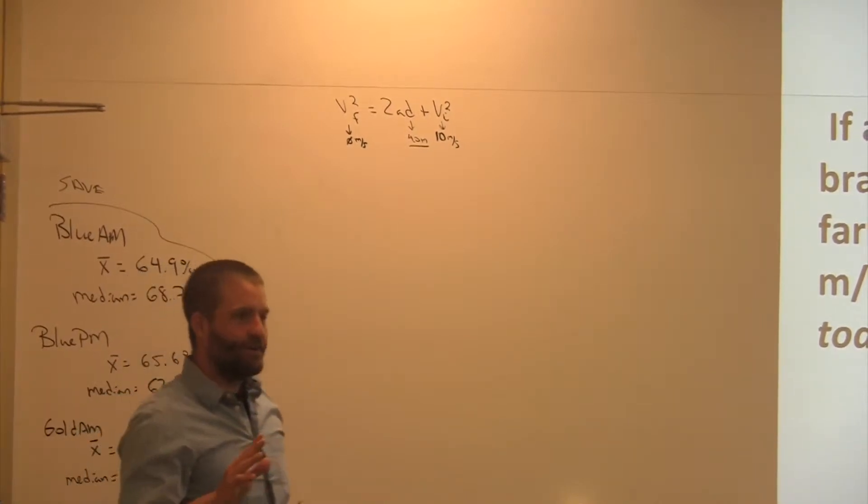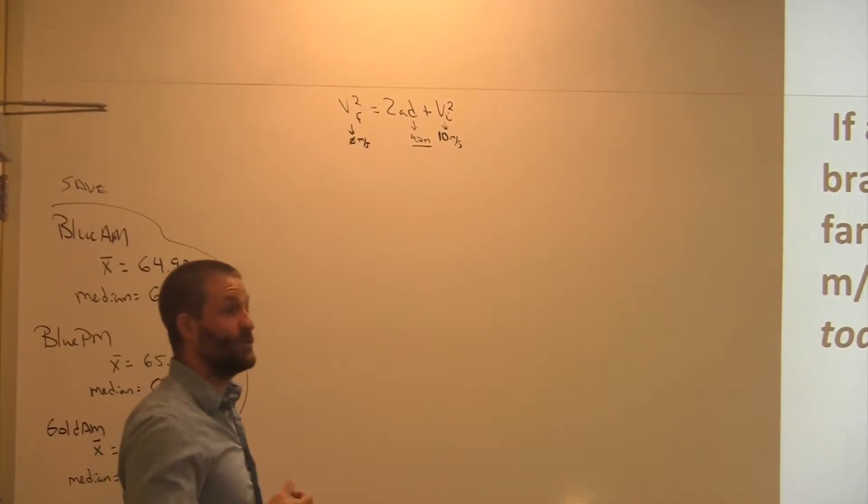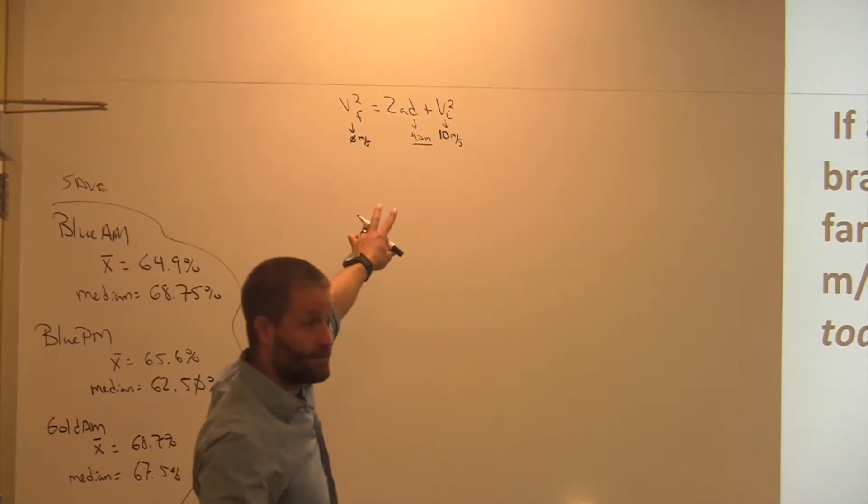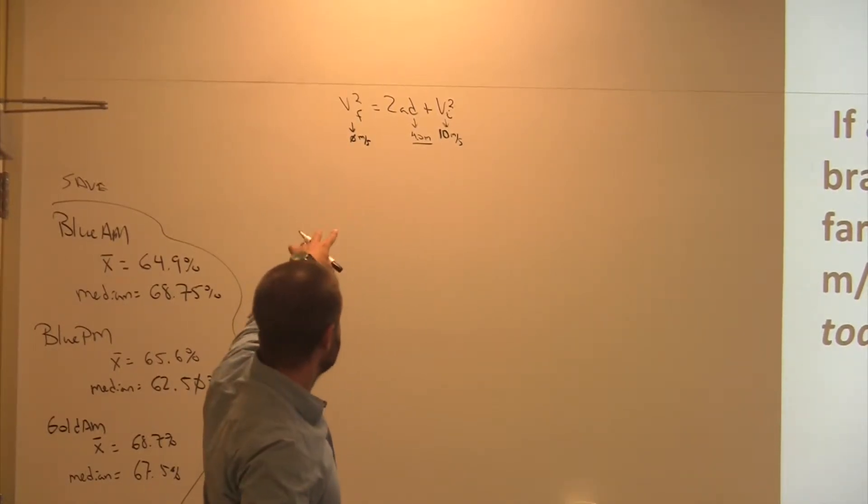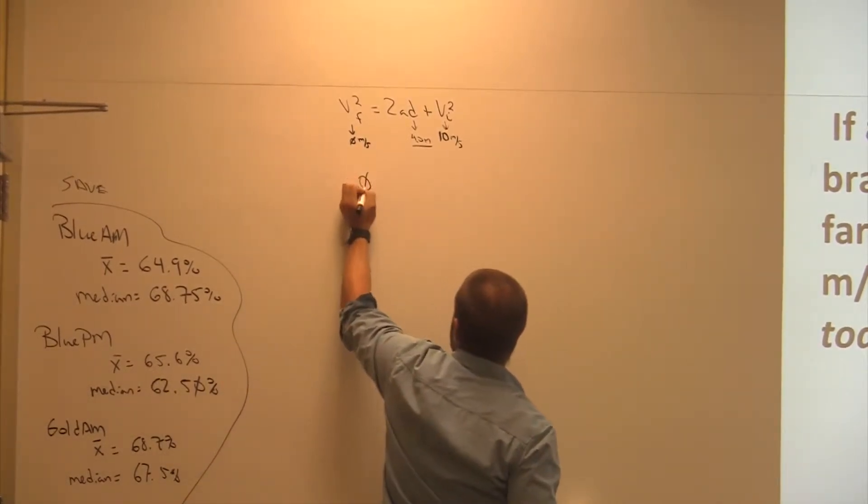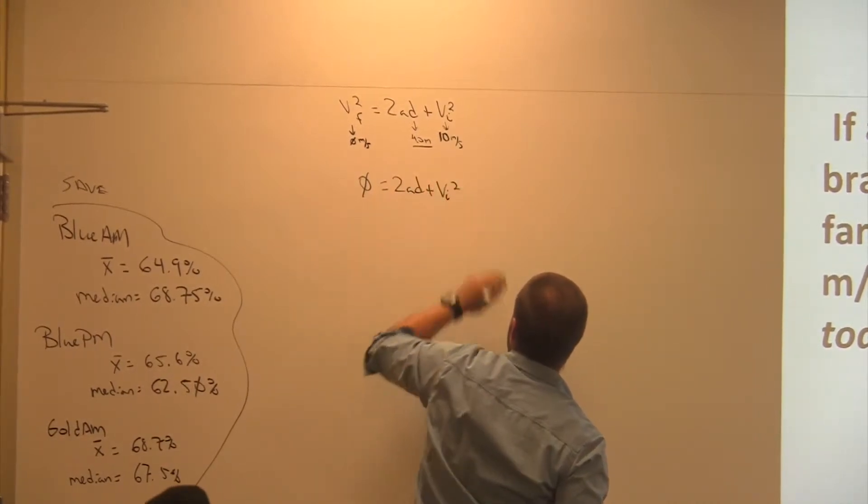Each car, depending on how fast it goes, has a certain braking. It has a certain deceleration. We don't use that term. We use negative acceleration. So now what I'm going to do is I'm going to solve algebraically for A. Now, since F is zero, can I take this off of here? Yes. So I'm going to do this. Zero equals 2AD plus V squared I.